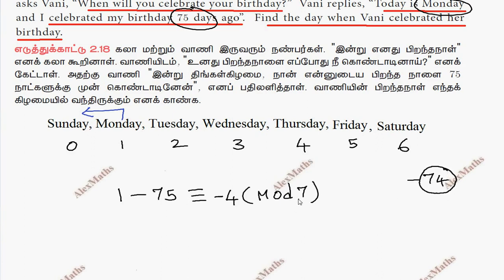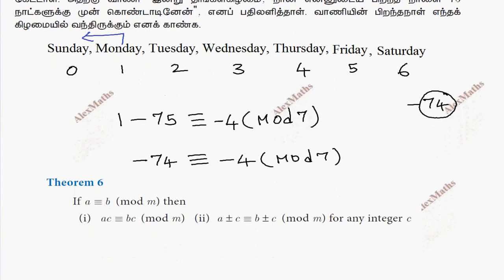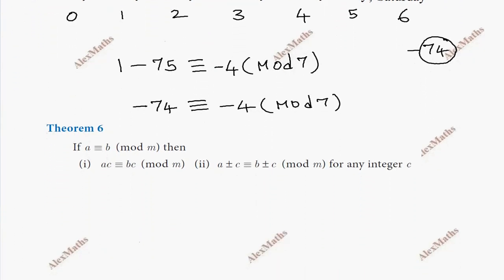7 into 10 is 70, which is equal to minus 4. So we rewrite: minus 75 is congruent to minus 4 mod 7. For the negative value, we need to convert to a positive value. A is congruent to b mod m.